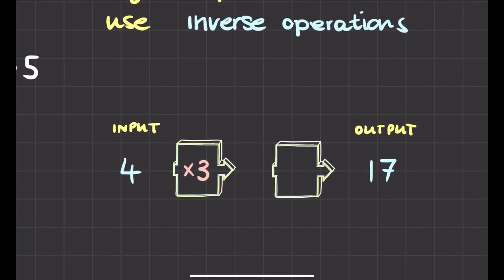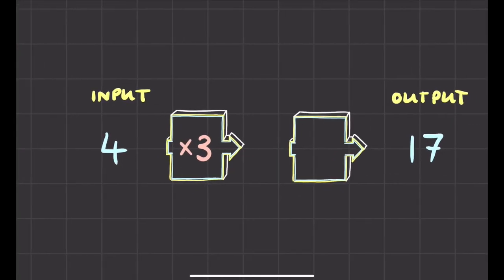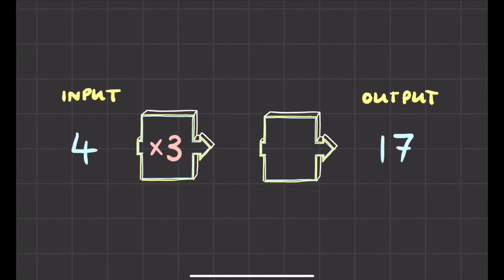Right, and one more quick question. So you might get asked, well what's missing in this function machine? I've got an input of 4 and I do some stuff to it and I get out an answer of 17. So let's think what would happen here. So the first thing that we do is times it by 3. So 4 times 3 makes 12.